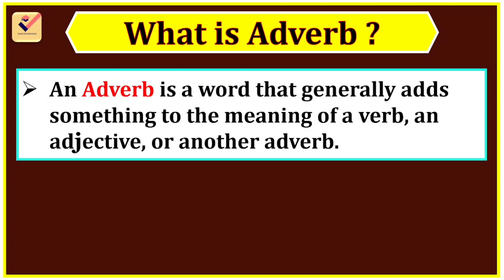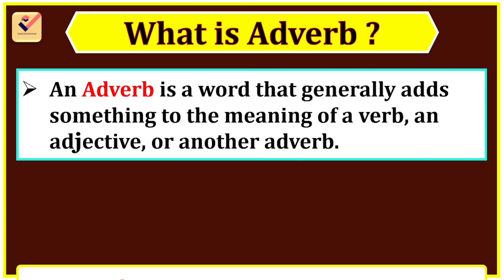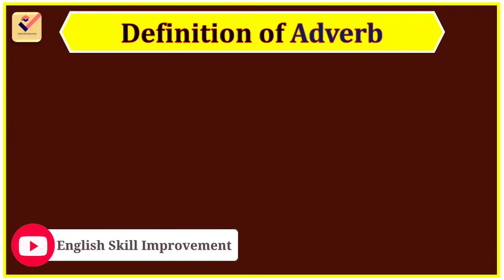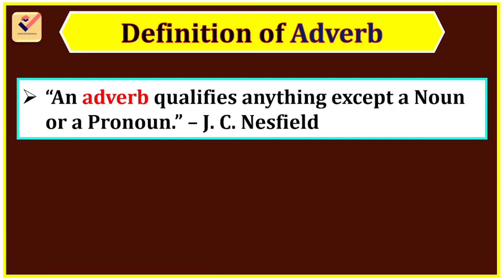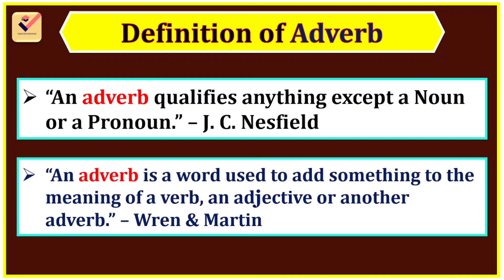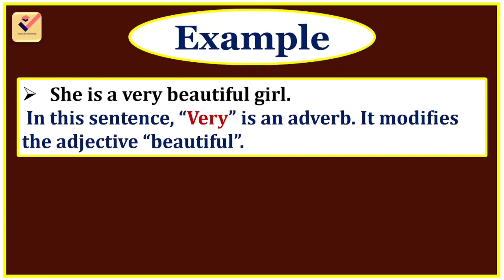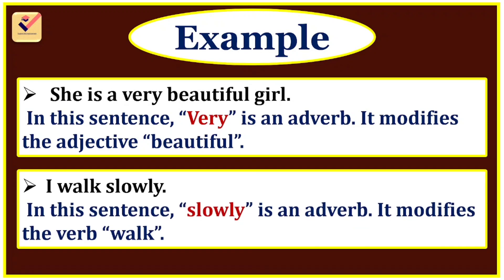What is an Adverb? An adverb is a word that generally adds something to the meaning of a verb, an adjective, or another adverb. For example: very, now, slowly, quickly, here, near, carefully, etc. According to J.C. Nesfield, an adverb qualifies anything except a noun or a pronoun. According to Ren and Martin, an adverb is a word used to add something to the meaning of a verb, an adjective, or another adverb. For example: 'She is a very beautiful girl.' — very is an adverb modifying the adjective beautiful. 'I walk slowly.' — slowly is an adverb modifying the verb walk.